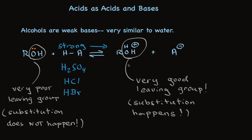So, in summary, alcohols are weak bases. Strong acids protonate them sufficiently to transform a very poor leaving group, OH, into a very good leaving group, water. And that's how strong acids catalyze reactions of this very weak base.